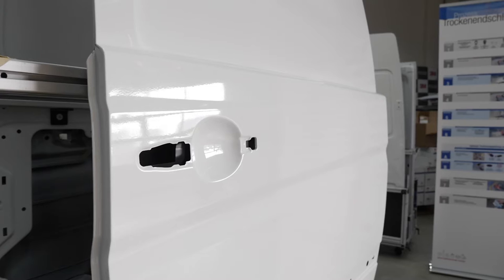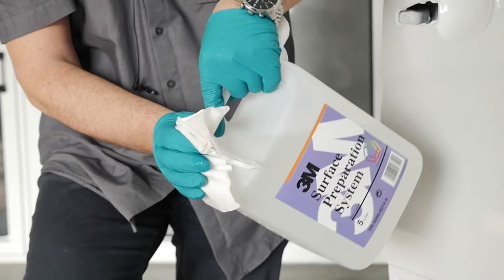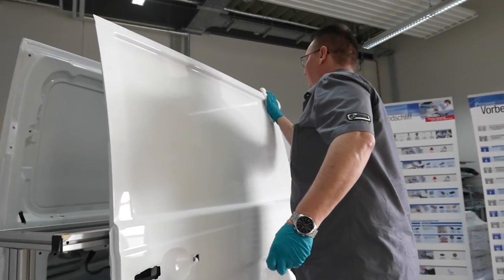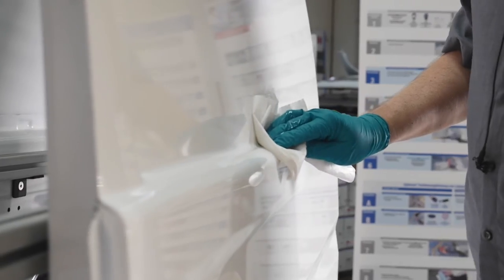Cleaning the surface of the substrate is essential before starting the application. Pour a small amount of 3M Surface Preparation System onto a lint-free cloth and wipe across the panel in a smooth action.